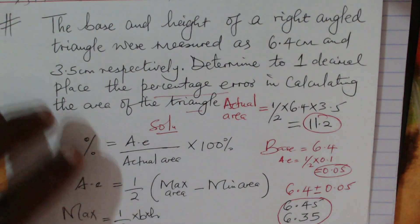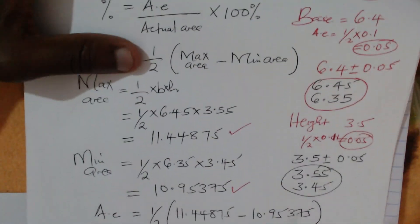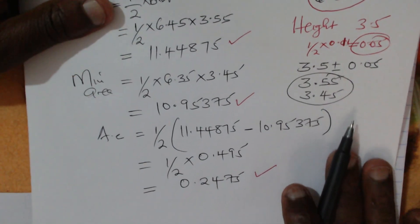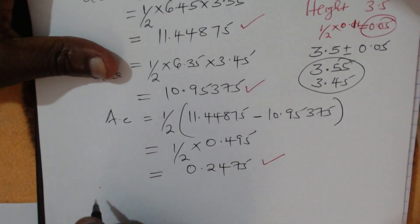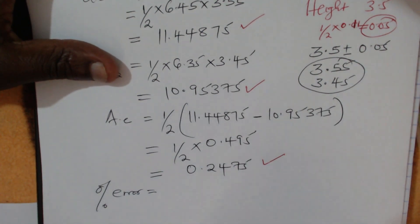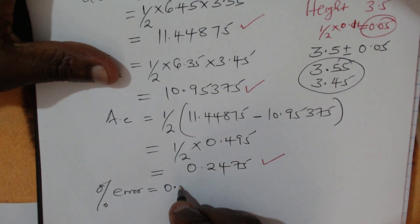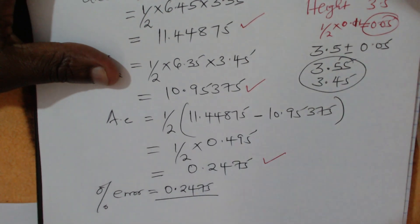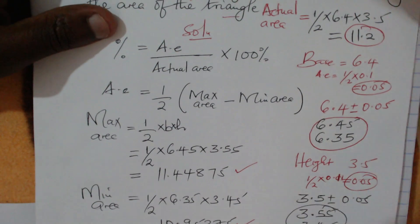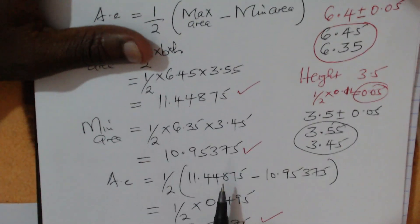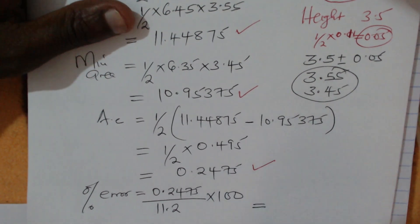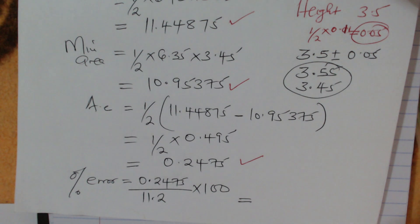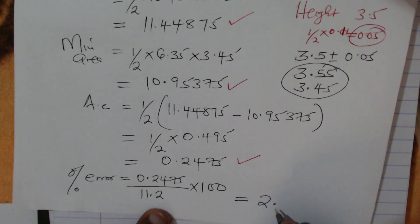Now we have everything to calculate the percentage error. Percentage error equals absolute error 0.24875 divided by actual area 11.2, multiplied by 100%. Using a calculator, and giving the answer correct to one decimal place, this gives 2.201, which rounds to 2.2%. That is how you solve this question.